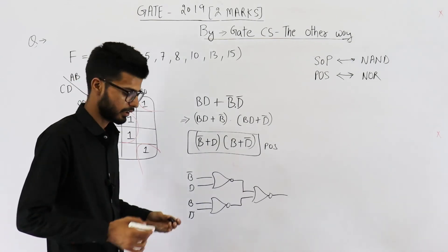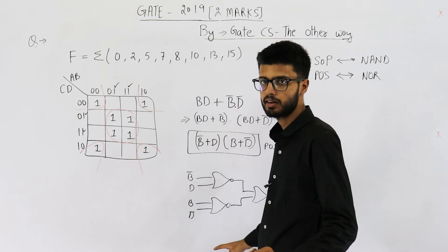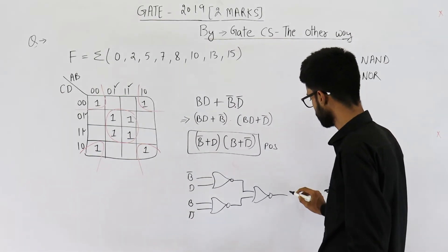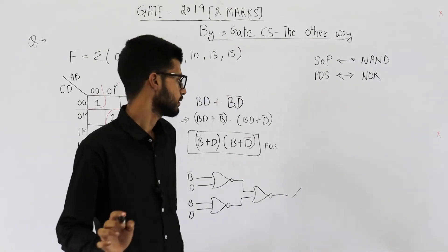So complements are available. They have mentioned it in question. That means B bar and D bar, they are available as an input. So this is the circuit. That means minimum number of NOR gates that are required is three.